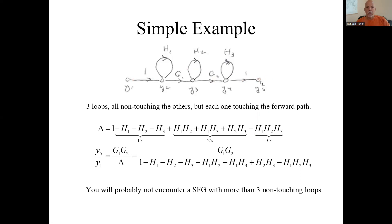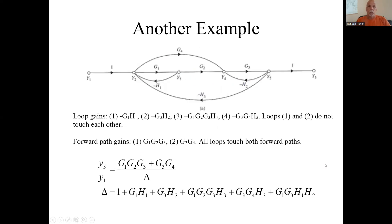And there's only one path all the way through. It touches all three loops. So its minor determinant is 1, but its path gain is 1 times G1 times G2 times 1. So it's G1 G2. We'll do some more examples in later videos.